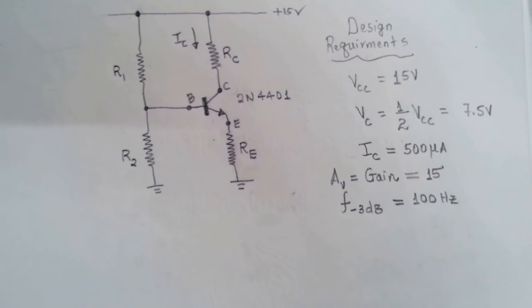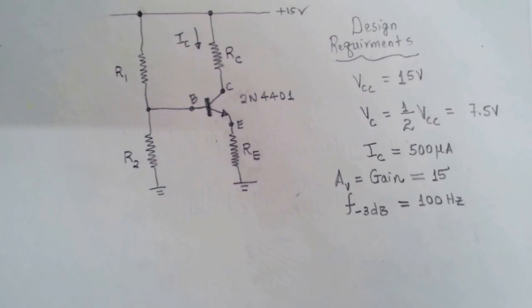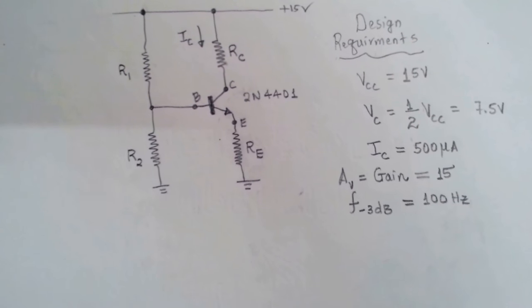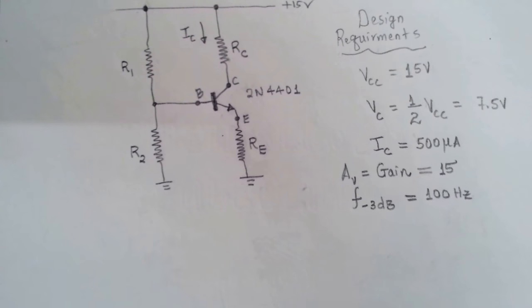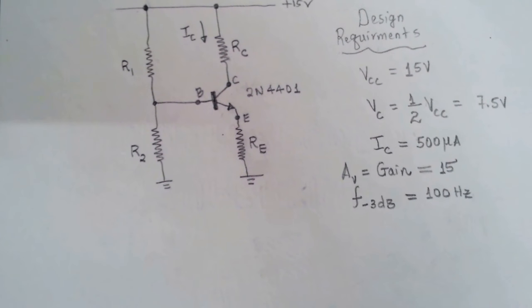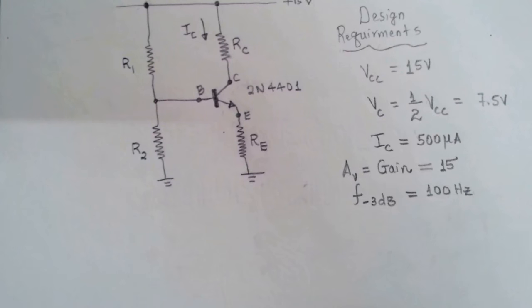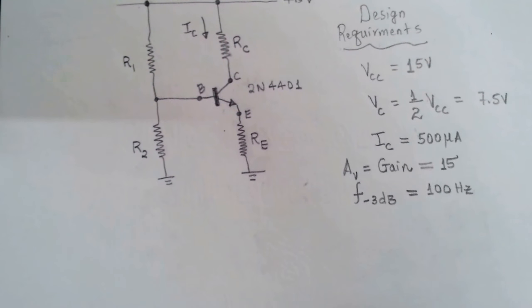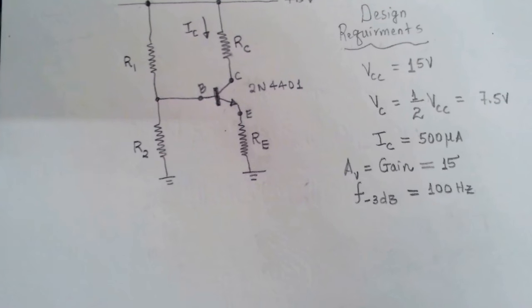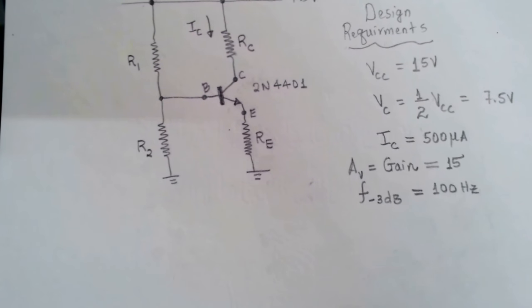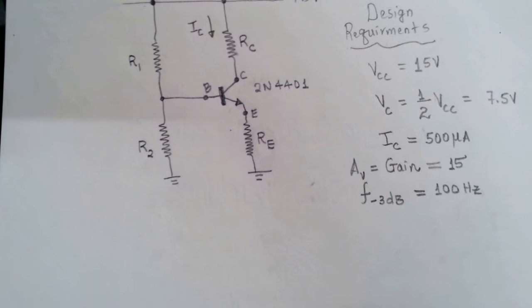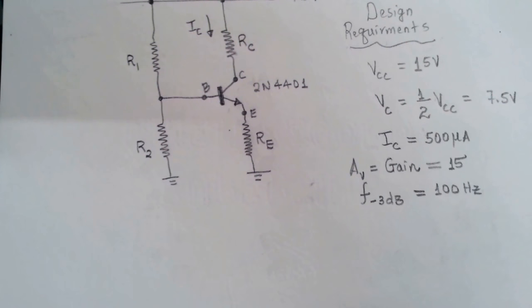The design requirements and actual schematic are shown. To recap: VCC is 15 volts, VC is half of VCC so that will be 7.5 volts with respect to ground. The collector current at quiescent — when no signal is applied at the base of the transistor — is going to be 500 microamps, the gain of the amplifier is to be 15, and the low frequency cutoff is also told to be 100 Hz.